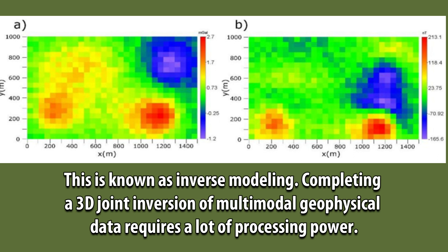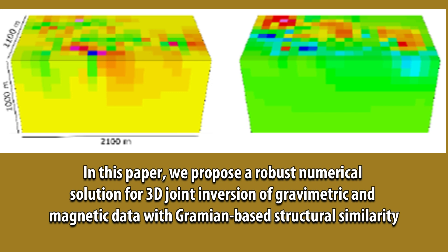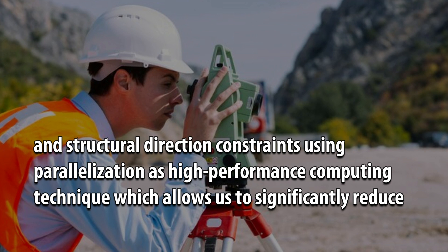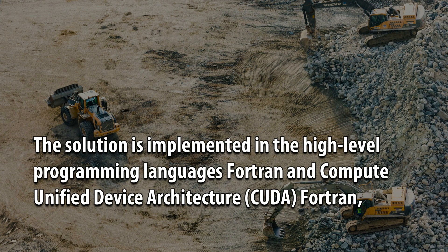Completing a 3D joint inversion of multimodal geophysical data requires a lot of processing power. Furthermore, because it involves modeling, iterative computations are needed to obtain a solution that meets the desired qualities, which can result in final results taking days or even weeks to receive. In this paper, we propose a robust numerical solution for 3D joint inversion of gravimetric and magnetic data with Gramian-based structural similarity and structural direction constraints, using parallelization as a high-performance computing technique, which allows us to significantly reduce the total processing time based on the available RAM and video random access memory volume and improve the efficiency of interpretation. The solution is implemented in the high-level programming languages Fortran and Compute Unified Device Architecture (CUDA) Fortran.